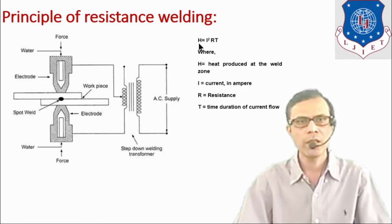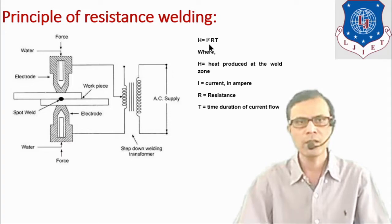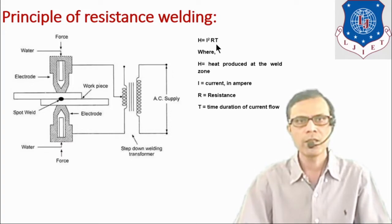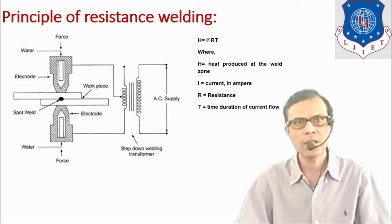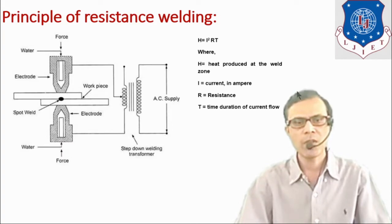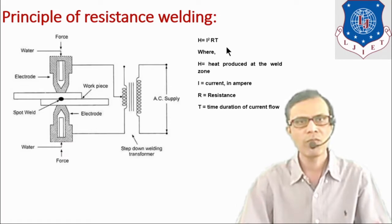In this equation, H is the heat produced at the welding zone, I is the current in amperes, R is the resistance, and T is the time duration for which current flow takes place. So heat produced at the welding zone is directly proportional to the current, resistance, and time duration for which the current is passed through the circuit.